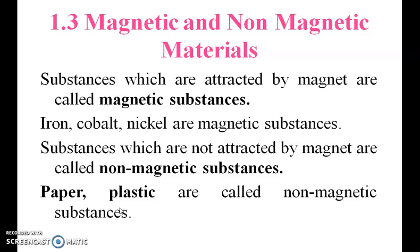Looking at the picture: magnetic substances are iron, cobalt, and nickel. These materials are magnetic substances — they are attracted by a magnet. Non-magnetic substances include paper and plastic. This material near the magnet is non-magnetic and is not attracted.